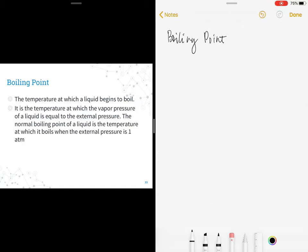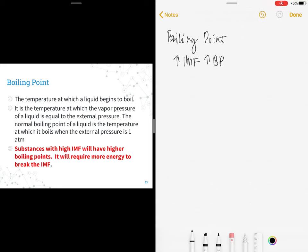So the boiling point happens when the vapor pressure of your liquid is equal to the external pressure. Of course, the higher the intermolecular force of attraction in your molecule, the stronger the intermolecular forces, the higher your boiling point. Why? You will need a greater amount of energy to break the forces between your molecules.